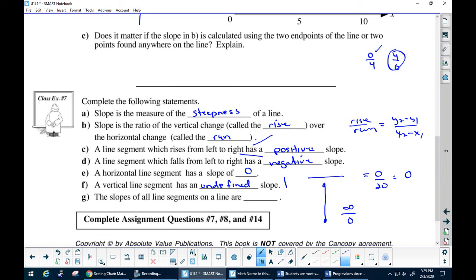And it says the slopes on all line segments - the slope of all line segments on a line are... so it's like if I have this slope and say I'm like, okay, I'm going to pick this rise and this run, or this rise or this run, or this rise or this run, what will you find? They'll all be the same, right? If you found different slopes, that would be weird. You'd be like, what? Shouldn't it be the same everywhere?